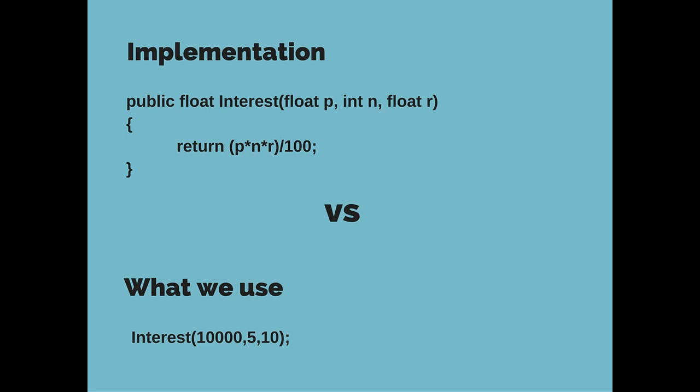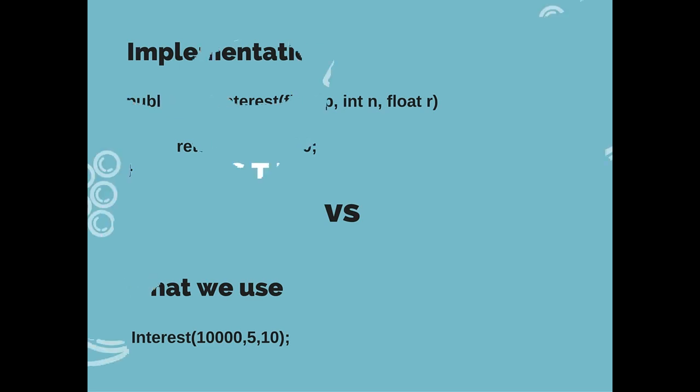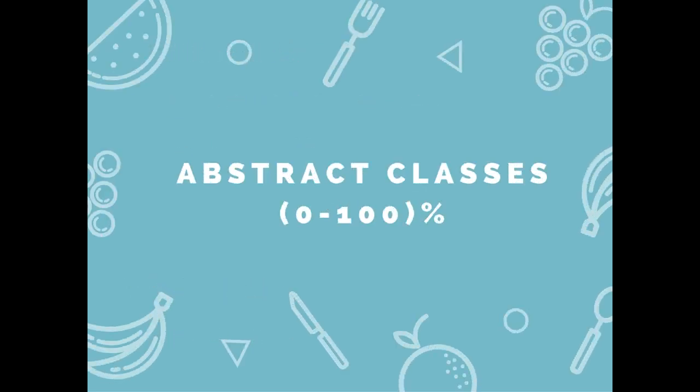There are two ways to implement abstraction in Java: one being abstract classes and the other being interfaces.